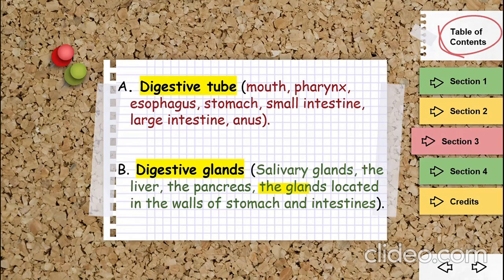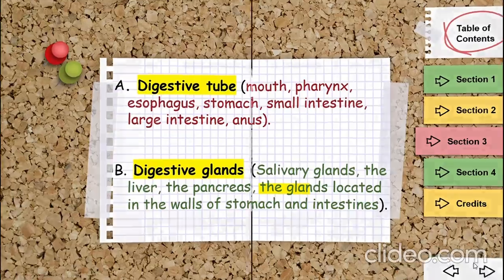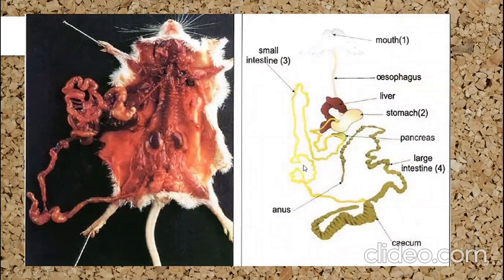The other major part of the digestive system is the digestive glands, which include the salivary glands, the liver, the pancreas, and the glands located in the walls of the stomach and intestines. Let's see them here.